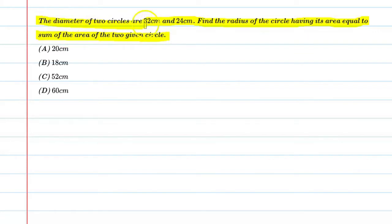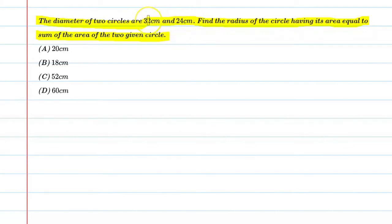You have two circles with diameters given — one is 32 centimeter and the second one is 24 centimeter. If we add the areas of these two circles, and we have a third circle, then find what is the radius of the third circle.